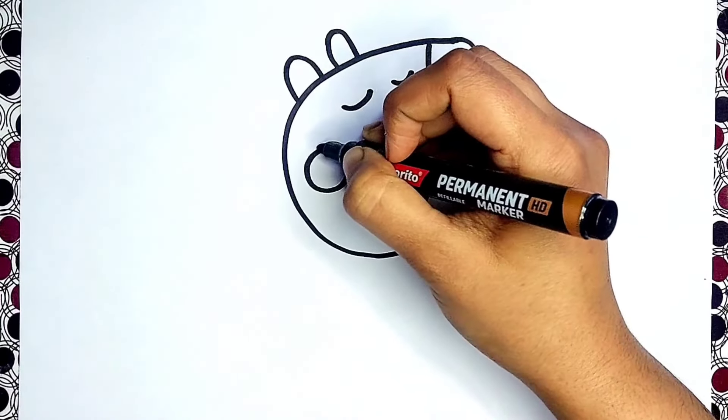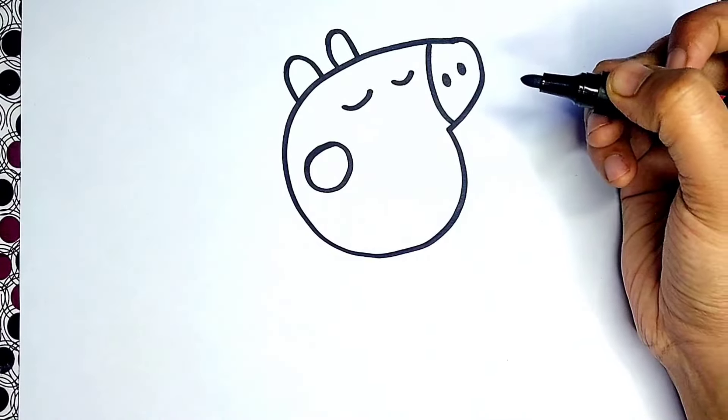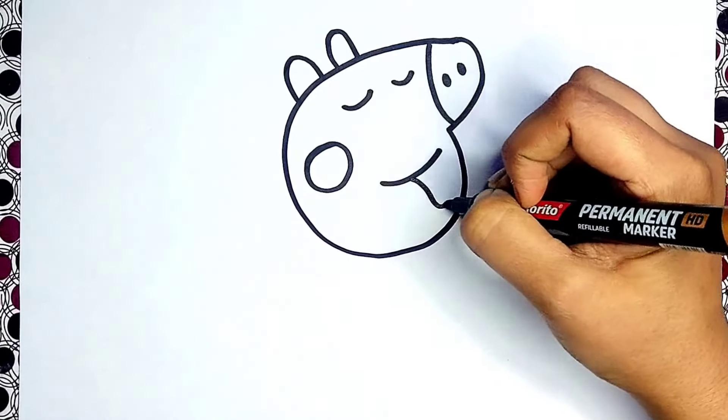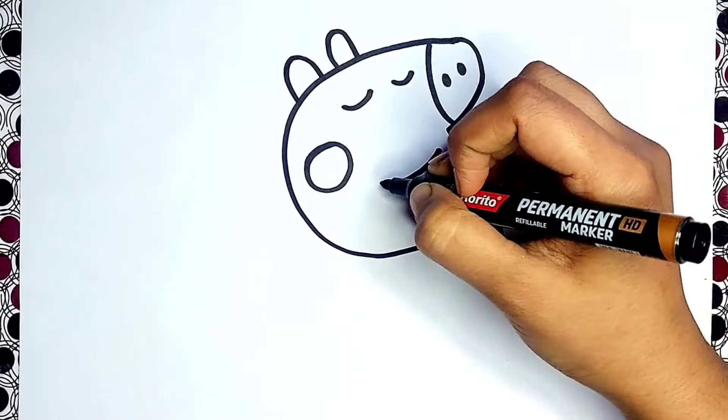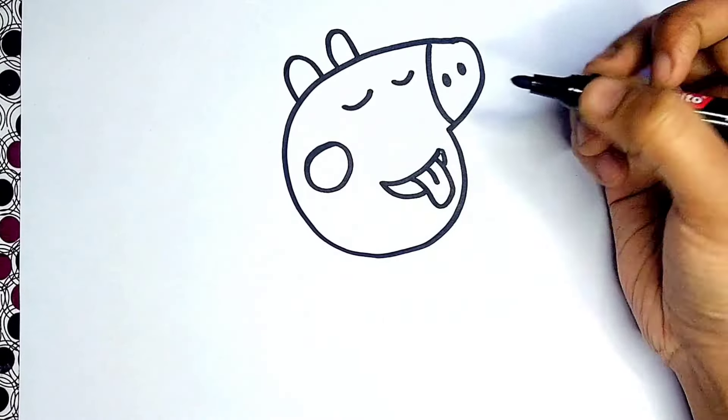Now I'm drawing Peppa's eyes. Now it's time to draw her cheek. And now I'm drawing her smiley face. Now I'm drawing Peppa's tongue and she's licking her favorite ice cream.